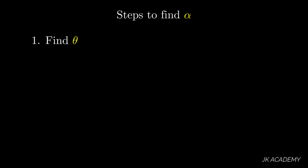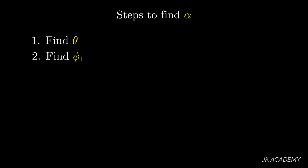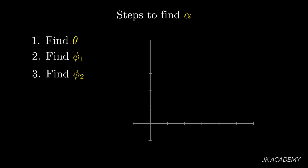Step number two: find phi1. Phi1 is the angle between the radius vector and tangent 1 on curve 1. To understand this better, watch video number four in the polar curve playlist. Step number three: find phi2, which is the angle between the radius vector and tangent 2 on curve 2.